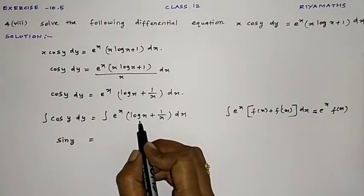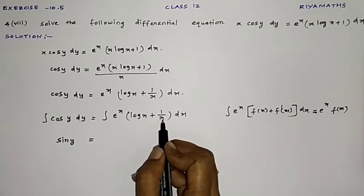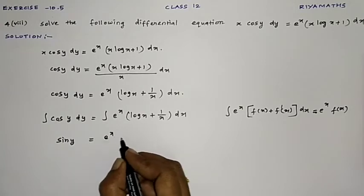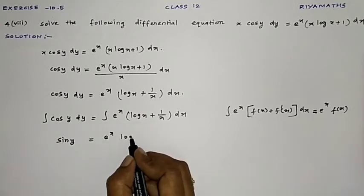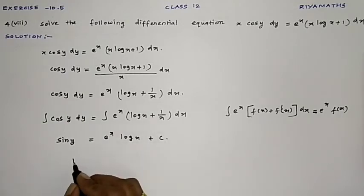The formula for this is e^x f(x). So log x differentiated is 1/x. So this is f(x), this is f'(x), and e^x is there. So e^x f(x). Here f(x) is log x plus some constant c.